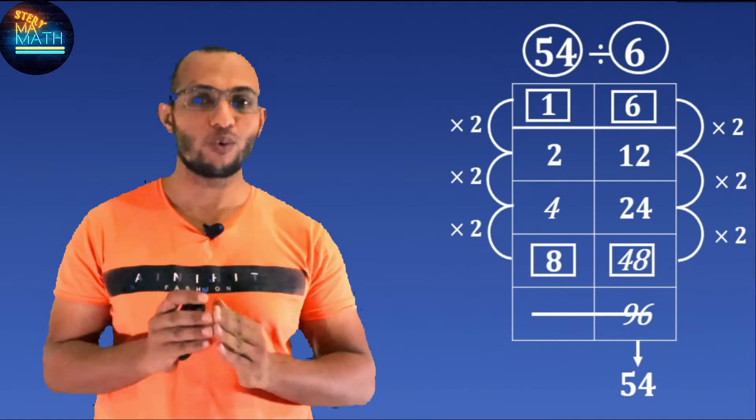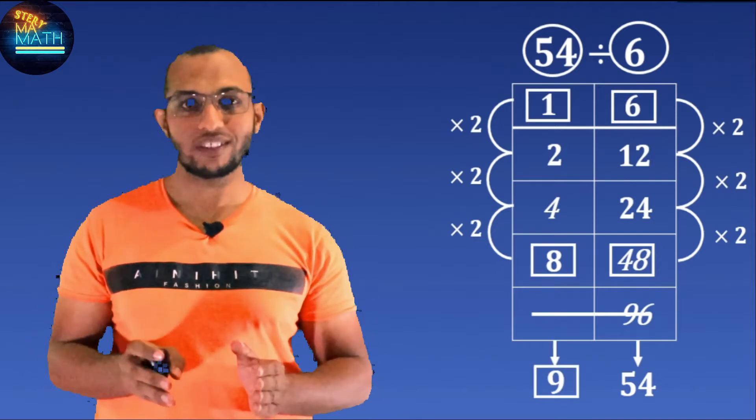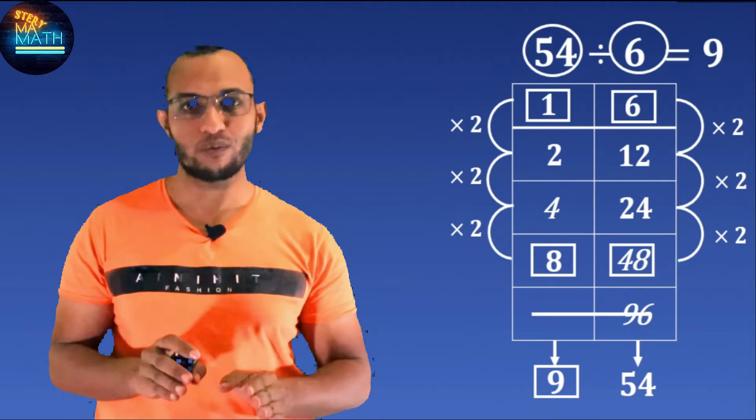And similarly, add up the corresponding parts on the left to get 1 plus 8 is equal to 9, and that is the quotient. So 54 divided by 6 is equal to 9. It's the magic of Egyptians method.